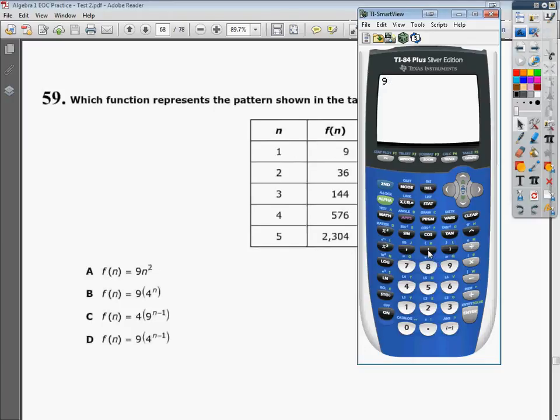So when I plug in 1 here, 9 times 1 squared, I get 9. So I plugged in 1 and got 9, just like it says. That's a good sign. So I do 9 times 2 squared, I get 36. So that's looking good.